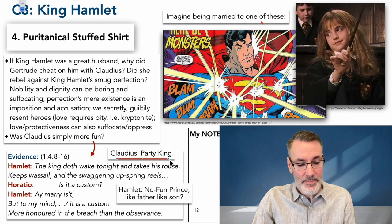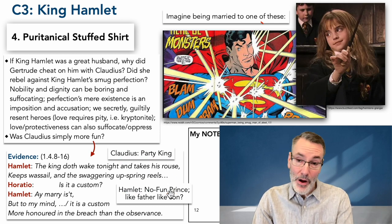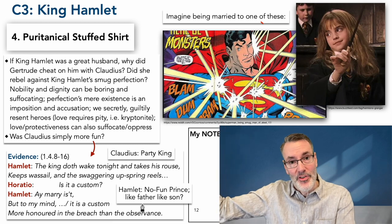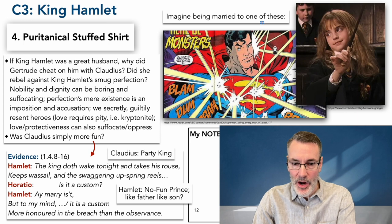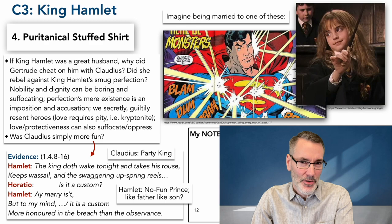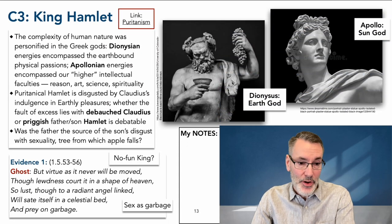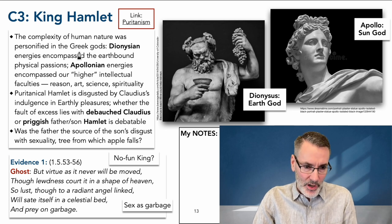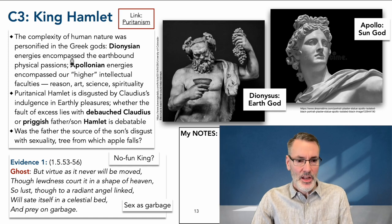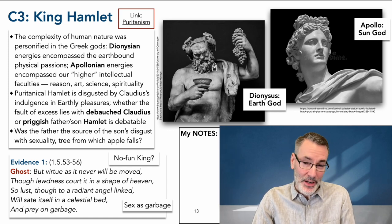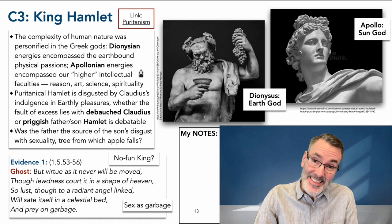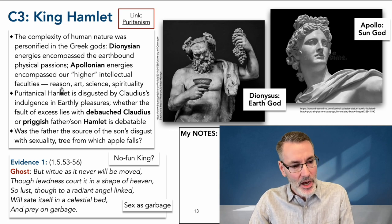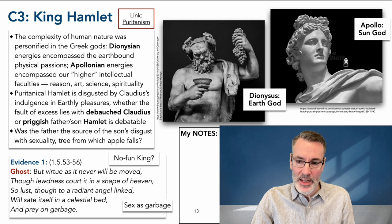No fun prince — like father, like son. Claudius is a party king in strong contrast to both the brother and the son. The apple doesn't fall far from the tree — that's genetically true; we inherit personality traits, and the environment works on those traits to make us who we are. I think King Hamlet was probably this kind of puritanical guy. The complexity of human nature was personified by the Greek gods. The Dionysian energies encompass the earthbound physical passions — Dionysus, Bacchus, the god of wine and revels, the god of Claudius. And the Apollonian god Apollo, the sun god Hyperion — the Apollonian energies encompass our higher intellectual faculties: reason, art, science, and spirituality. That's where Hamlet wants to live.